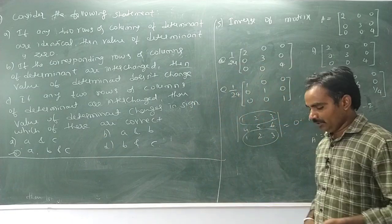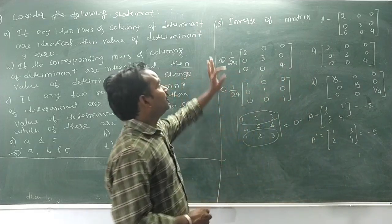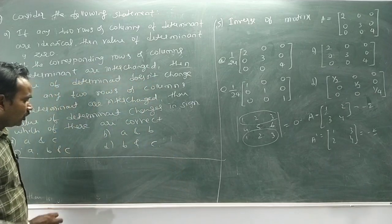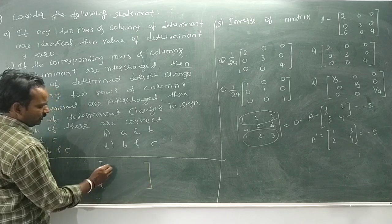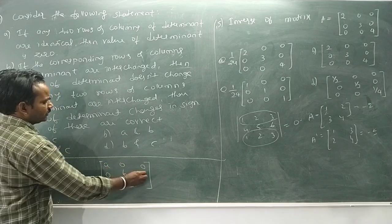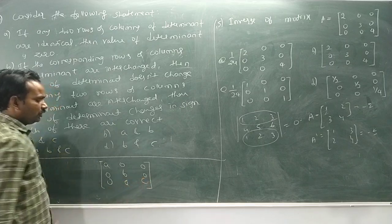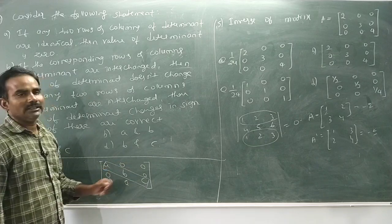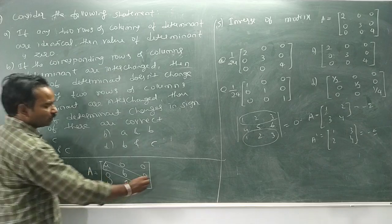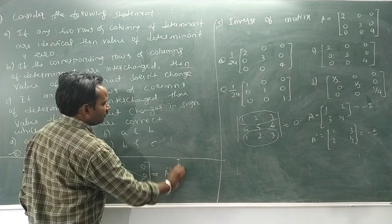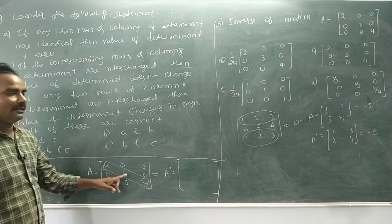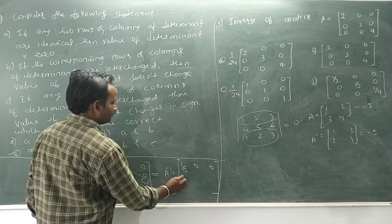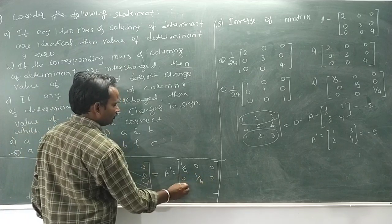To find the inverse of a matrix: if you have a diagonal matrix with elements A, B, C on the diagonal and zeros elsewhere, the inverse is simply one over A, one over B, one over C on the diagonal with zeros elsewhere.